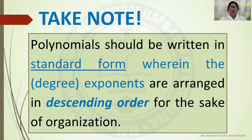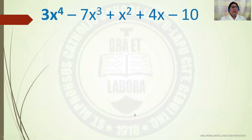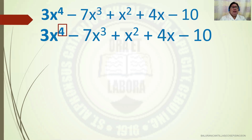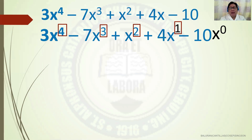Take note that polynomials should be written in standard form, wherein the exponents are arranged in descending order for the sake of organization. For example: 3x to exponent 4 minus 7x cubed plus x squared plus 4x minus 10. This means you start with the highest exponent, which is 4, followed by 3, then 2, then 1. The constant 10 has an exponent of 0, and x to the exponent of 0 equals 1, so 1 times 10 is simply 10.